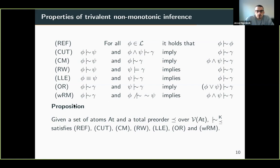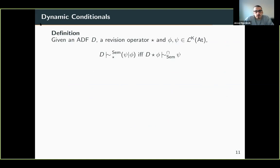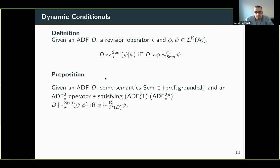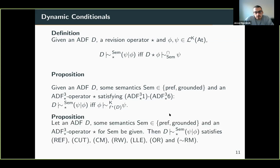With some care, you can easily generalize all of the machinery from the propositional setting to a three-valued setting. The third concept in the triangle is dynamic conditionals. A dynamic conditional holds relative to some semantics and an ADF if and only if, when we revise the ADF by the antecedent of the dynamic conditional, then the consequent psi holds according to the chosen semantics. We could show that these dynamic conditionals can be seen as a special case of the three-valued non-monotonic inference relations, and consequently — as a corollary — they also satisfy all of the KLM properties.